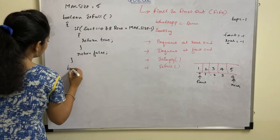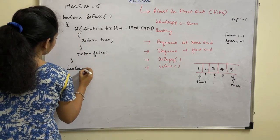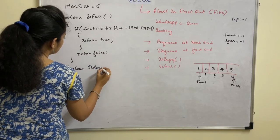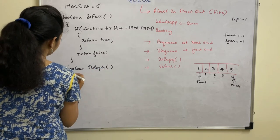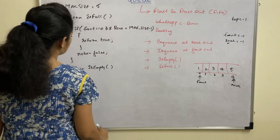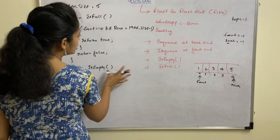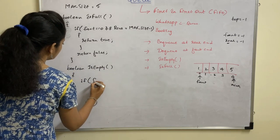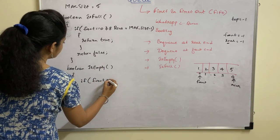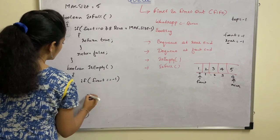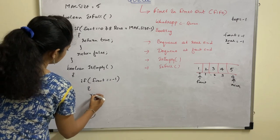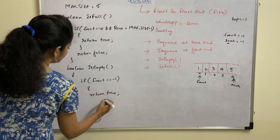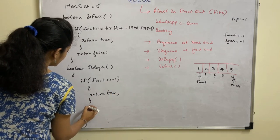The second method is isEmpty. isEmpty is used to check whether the Queue is empty or not. The condition is: if front equals minus one, return true; otherwise return false.